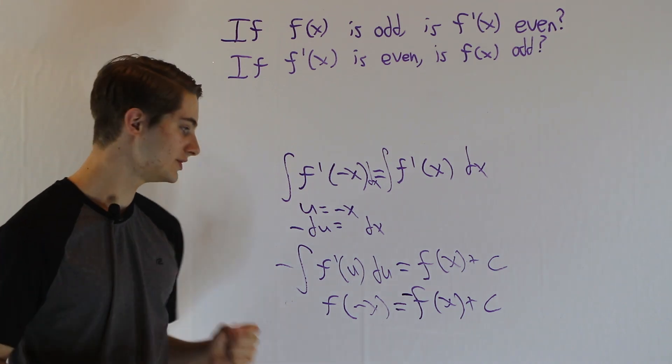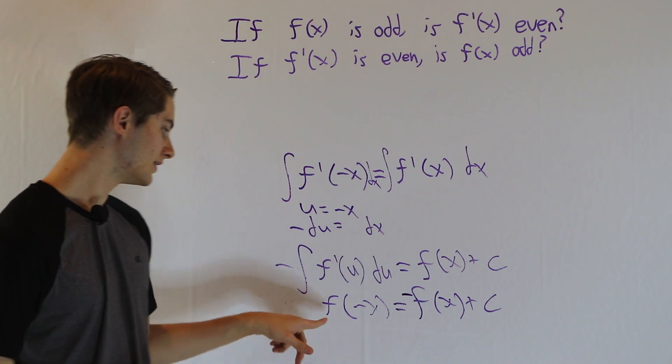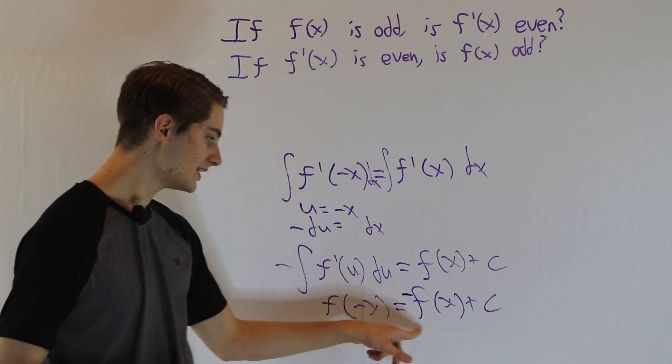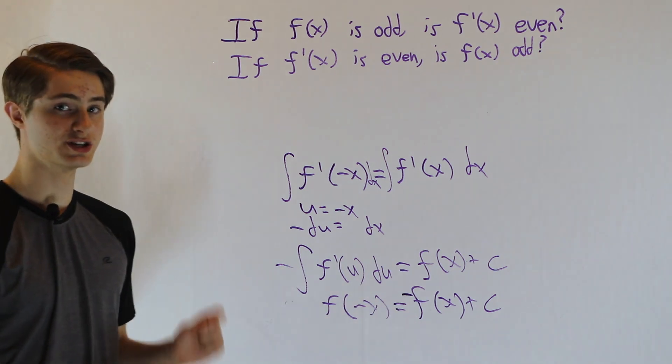However, if we have c being anything other than 0, for example, if c was 1, then f of negative x is going to be negative f of x plus 1, which means these two are not equal and the function is not odd.